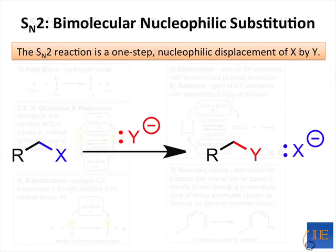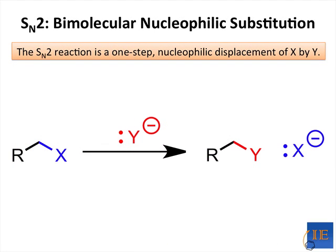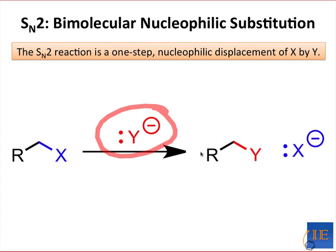SN1 and SN2 are both nucleophilic reactions, which means that the group doing the substituting, Y here, is a nucleophile, and the electrons in the new CY bond come from Y.